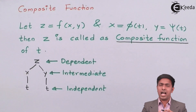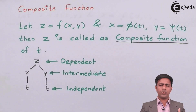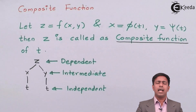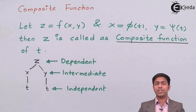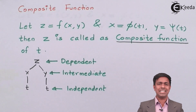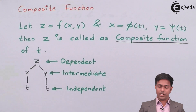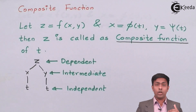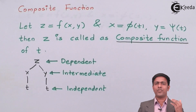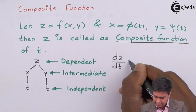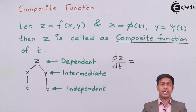Whenever differentiation is asked in the exam, we take the relationship between the dependent and independent variable. We look at both sides of the equation and observe the differential terms for that relationship. Such functions can be solved using the chain rule. So let's apply the chain rule on this tree diagram to find dZ/dT.